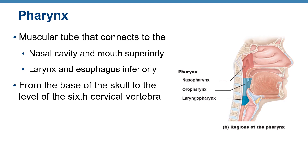The pharynx is a muscular tube connecting the nasal cavity and oral cavity to the larynx and esophagus. It runs from the base of the skull to the level of the sixth cervical vertebra — in everyday language, we call it the throat.